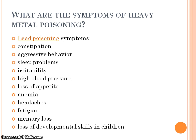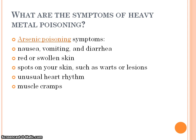Symptoms associated with lead poisoning include aggressive behavior, sleep problems, irritability, high blood pressure, loss of appetite, anemia, headache, fatigue, memory loss, and loss of developmental skills in children. Arsenic poisoning causes nausea, vomiting, diarrhea, red or swollen skin, spots on your skin such as warts or lesions, unusual heart rhythms, and muscle cramps.